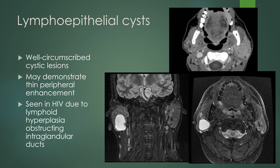Lymphoepithelial cysts are well-circumscribed cystic lesions within the parotid glands that can demonstrate thin peripheral enhancement. These are seen in HIV due to lymphoid hyperplasia obstructing the intraglandular cysts. Here's one of those large lymphoepithelial cysts with a thin wall. In this case it does not show a lot of peripheral enhancement, but when you see this appearance you can suggest looking for HIV.